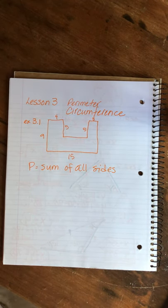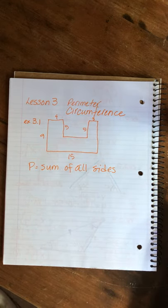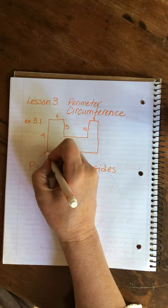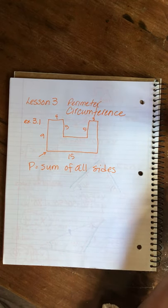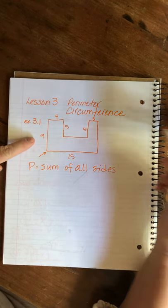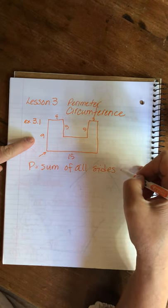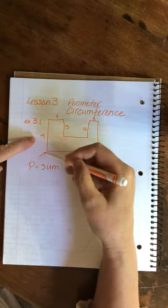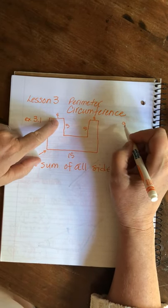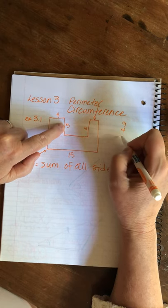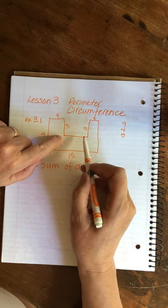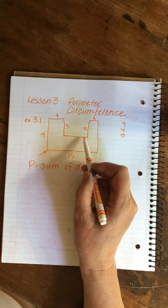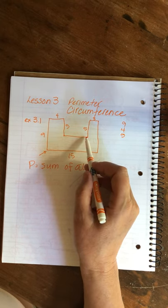Perimeter is just the sum of the sides. The most important thing is to pick a starting place so you don't get confused as you're adding. Let's start right here and go clockwise — you can start anywhere you want. I'm going to make a list of the numbers so they're in an easy format for adding. The first side is nine, then four, then five. Now we run into trouble because here we have a side with no number in front of it.